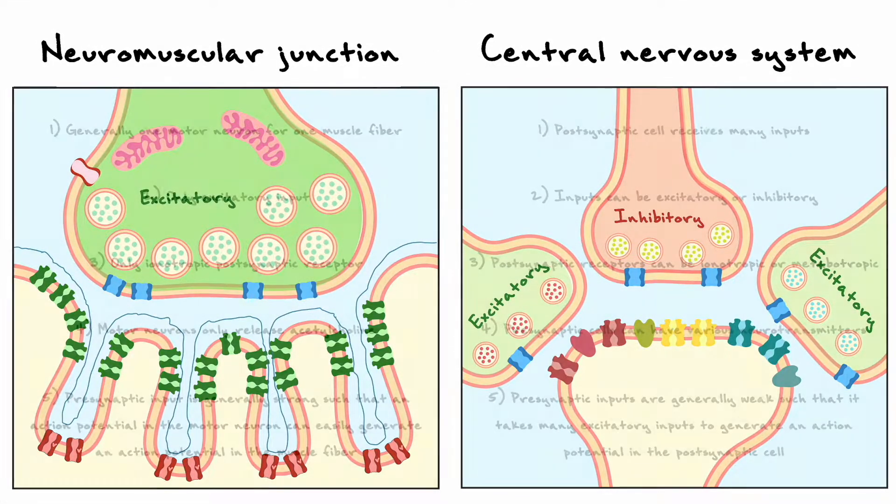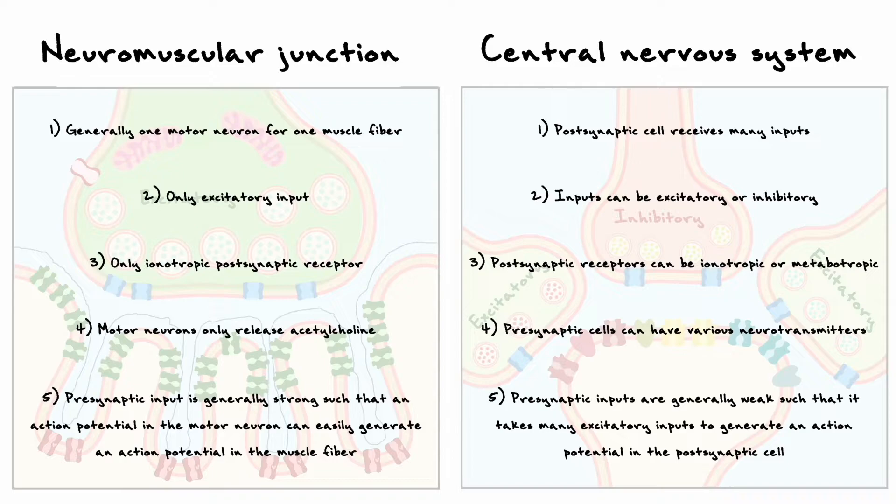Back to our schematic on the differences between the neuromuscular junction and the central nervous system, we now have covered metabotropic receptors, the different neurotransmitters, and synaptic summation, which already gives us a pretty good idea on how neurons in the central nervous system are different from neurons in the neuromuscular junction.